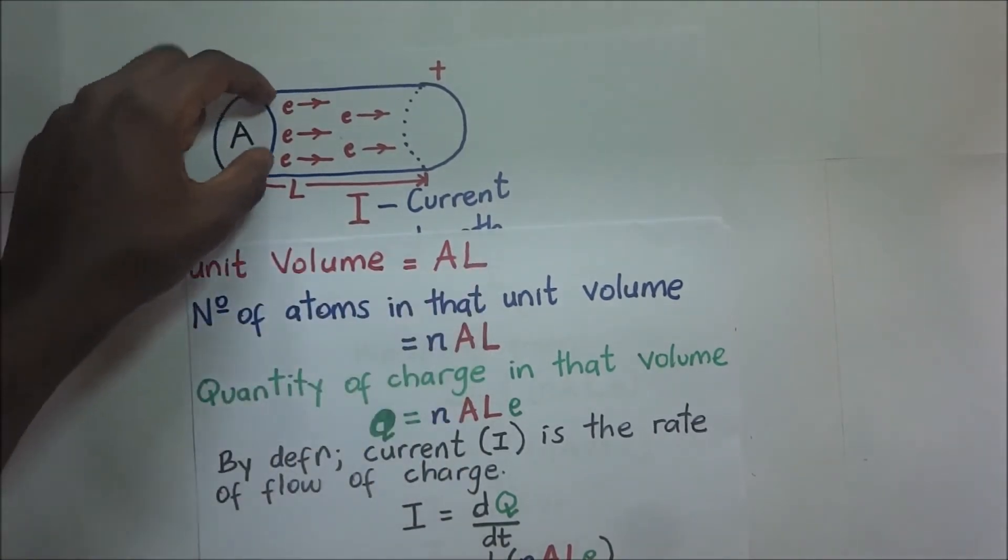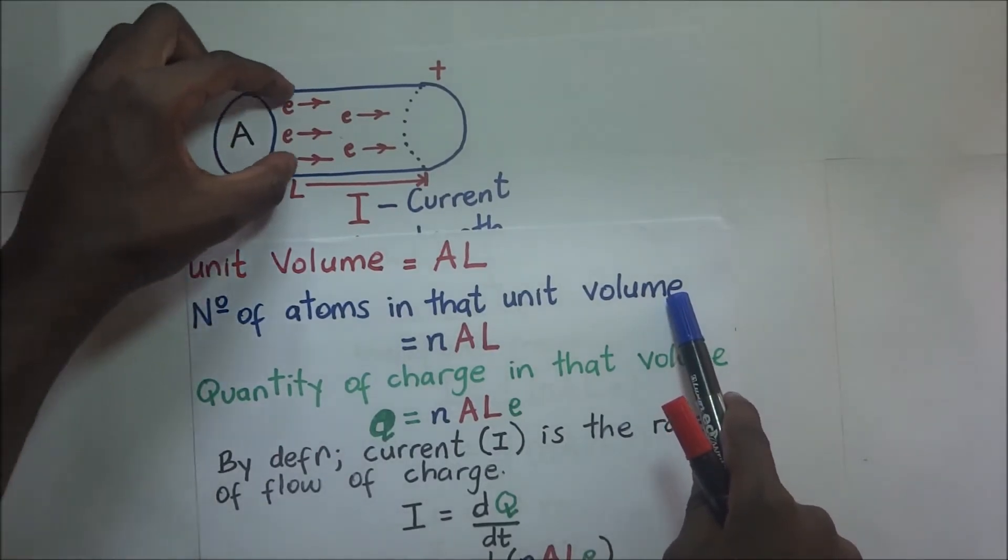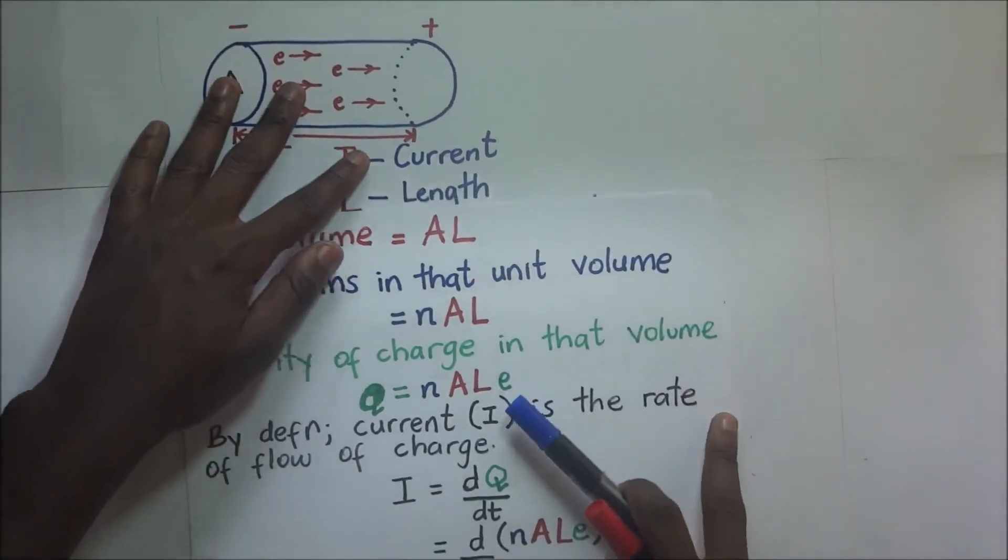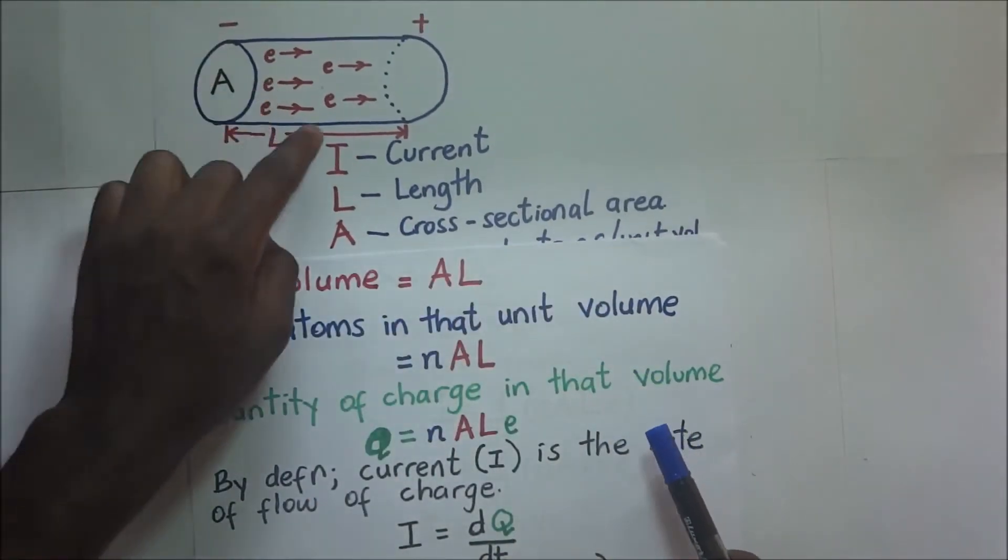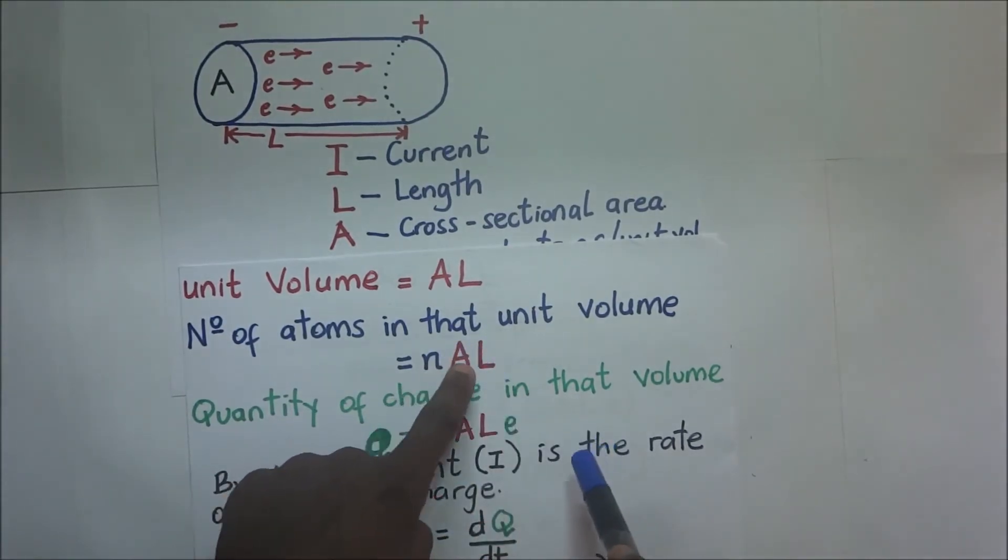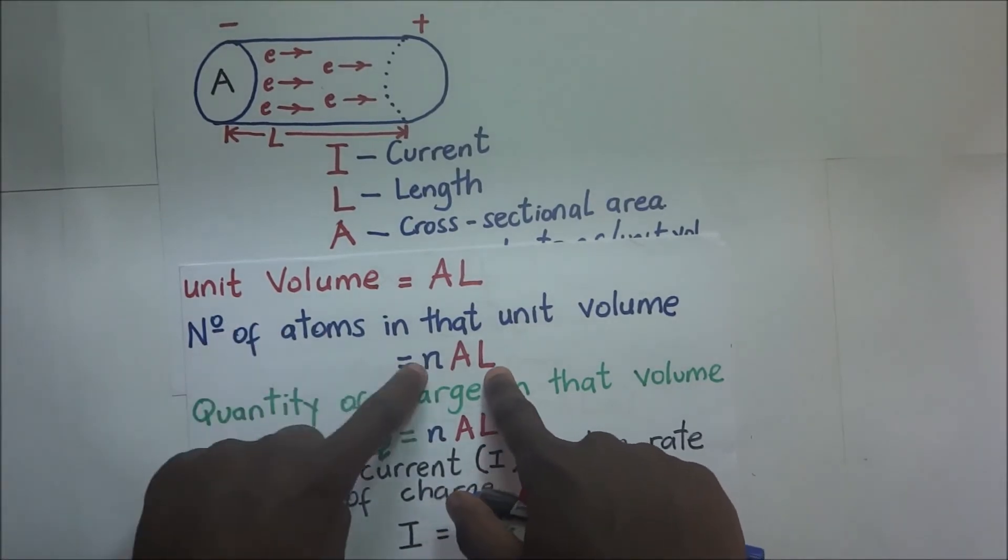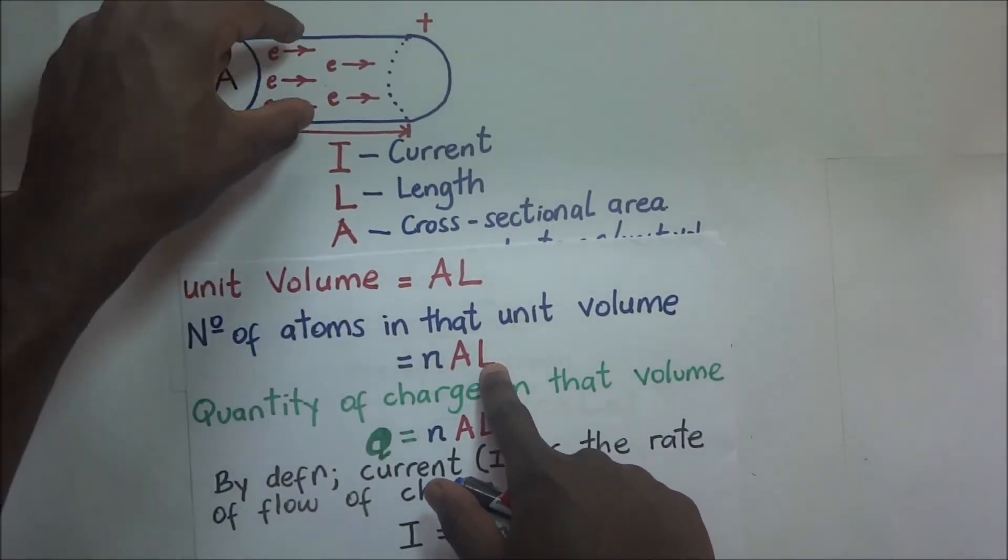And in this case, the cross-sectional area is A times the length, which is L. So the unit volume we are going to concentrate on is AL. Now, the number of atoms in this unit volume is going to be equal to the volume times N. Remember our value of N, it's the number of electrons in each unit volume. So the number of electrons is going to be N times the volume, which is NAL.